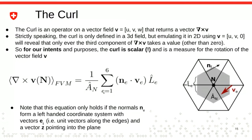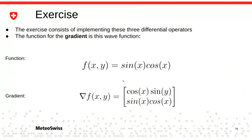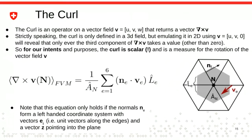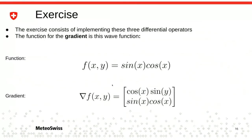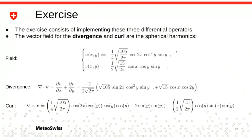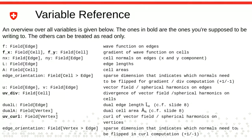For the curl we sum from one to six because we have six edges. Doing these three operators will be the second part of the exercise, introducing you to simple neighborhood reductions. Just for overview — the functions you'll take the gradient from will be sine multiplied by cosine. For divergence and curl, these are the input fields. Because we do numerics, we compare to the analytical output and will see some error.